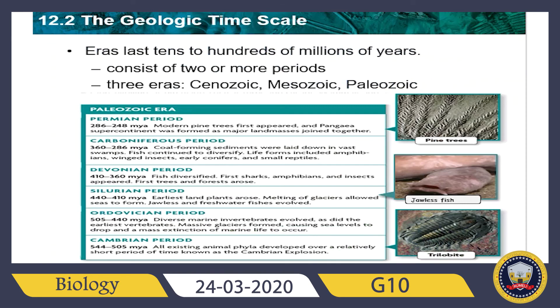Eras last tens to hundreds of millions of years and consist of two or more periods. We have three main eras: the Cenozoic, the Mesozoic, and the Paleozoic. The Paleozoic means ancient life, the Mesozoic means middle life, and the Cenozoic means present life.